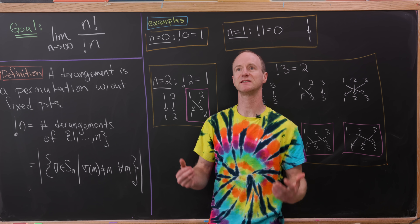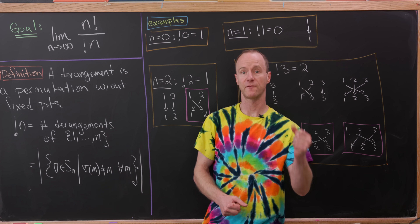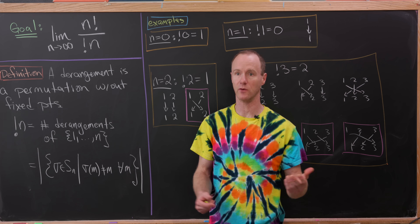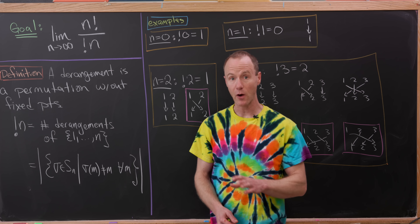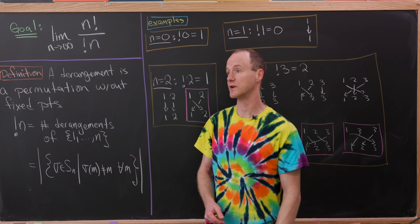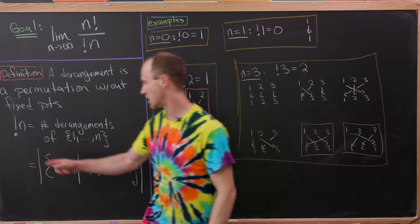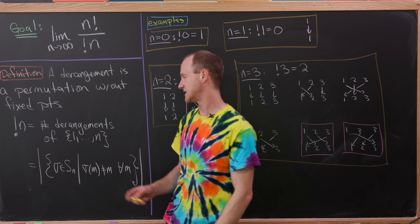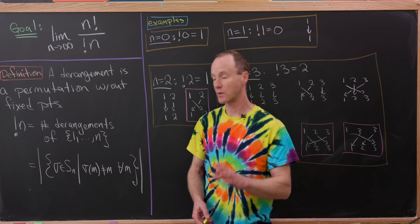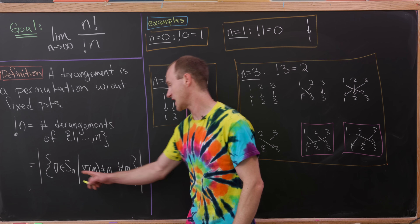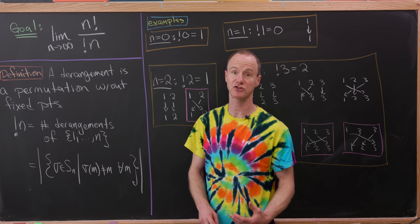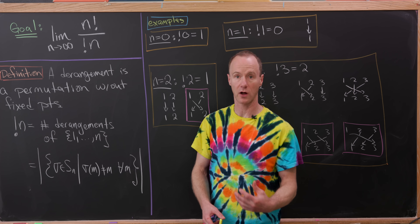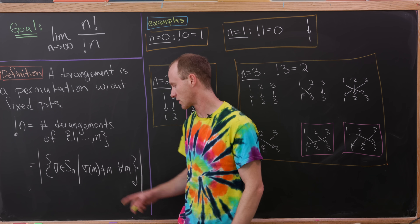So what's a permutation? That's simply a one-to-one and onto map from a set back to itself. So if that one-to-one onto map doesn't fix any points, then it's called a derangement. We're going to define something called the subfactorial of n, with the notation of an exclamation mark then n. That's defined to be the number of derangements of the set containing 1 up to n — the size of the set of all permutations, i.e., elements of the symmetric group S_n such that σ(m) ≠ m for all m between 1 and n. This ensures that there are no fixed points.